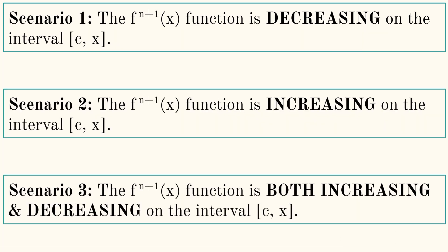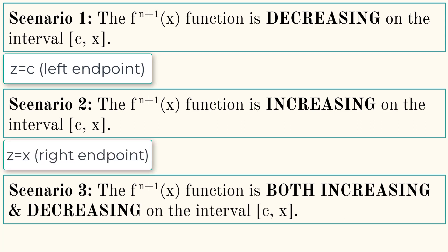In conclusion, we have three possible scenarios. Scenario 1 is if your n plus 1st derivative is decreasing. If it's decreasing, then you're going to use z equals c, your center. For scenario 2, if that indicated derivative function is increasing, then we're going to use z equals x, or the right endpoint of the interval.